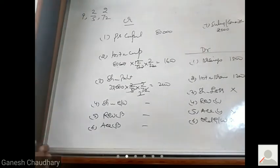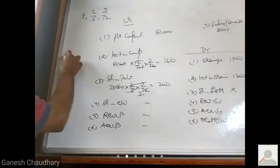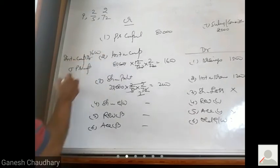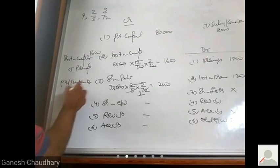Now entries and accounts also need to be made. First entry for interest on capital. Interest on capital account debit to P's capital 1600. P&L suspense account debit to P's capital 2000.